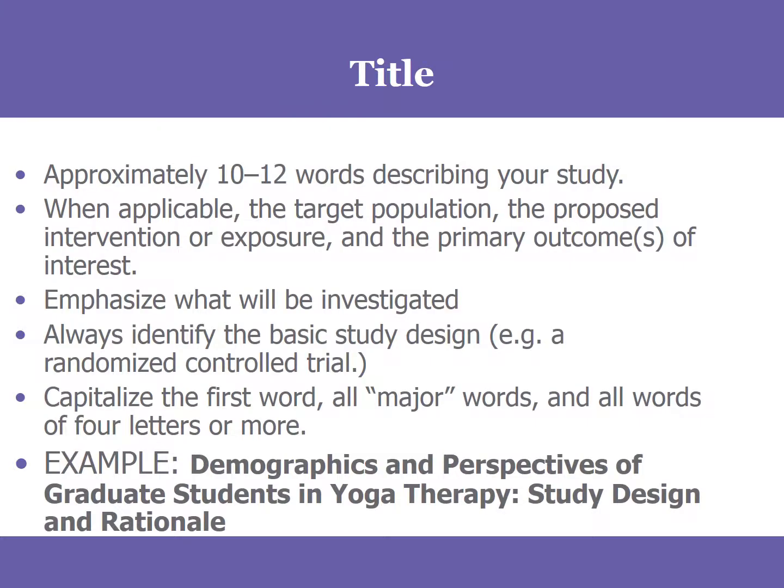You want to start with a title that is about 10 to 12 words, and if possible include information about who the target population will be and what the intervention or the exposure is. In an intervention study like a randomized controlled trial or a pre-post study, you're going to talk about the intervention. If you're looking at an observational study that compares exposure to a certain outcome, you're going to explain both the intervention or the exposure and especially the primary outcome or any other outcomes that might be important.